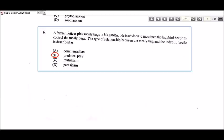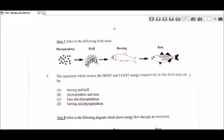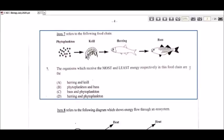Let's look at the next question — item 7. It refers to the following food chain: phytoplankton being eaten by krill, being eaten by herring, and that being eaten by the bass. The organisms which receive the most and least energy respectively — the organism that's going to receive the most energy has to be the phytoplankton. The phytoplankton is behaving as a producer, so it's going to receive energy directly from the sun.